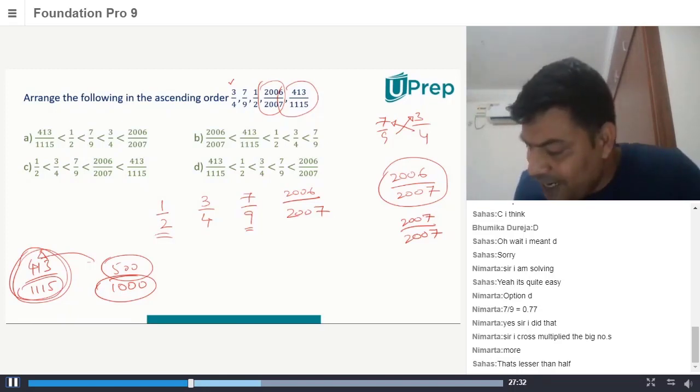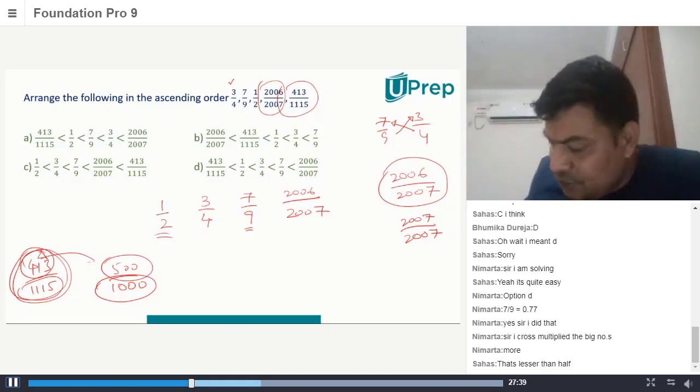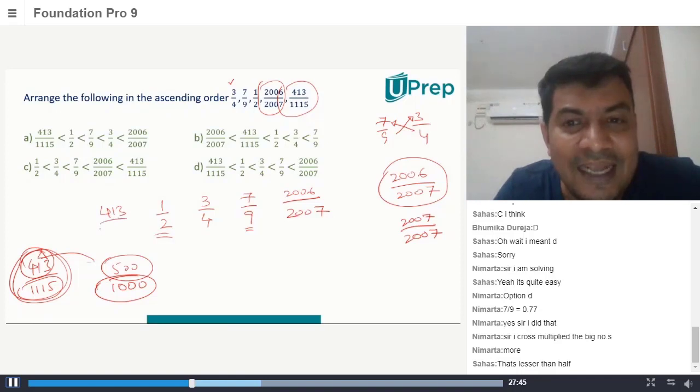This numerator is less than 500 and this denominator is more than 1000. Can I see that? This numerator is less than the half of 1115. Can I say that is definitely less than half?